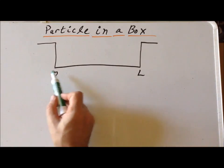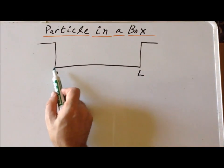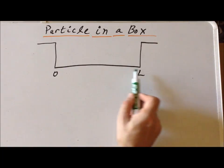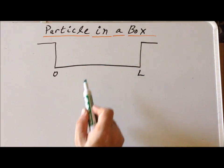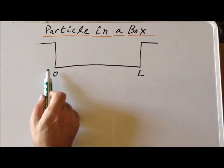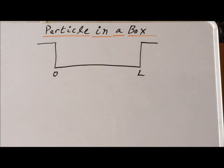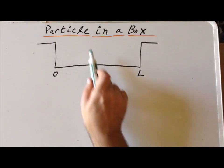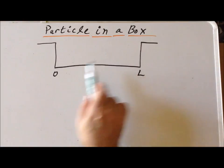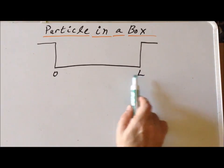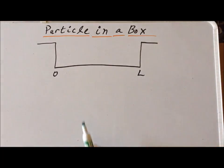By convention, we go along the x-axis, and the length of the box is L, so we can think of it as a coordinate system going from 0 to L — this is the area inside the box. Anything to the left of 0 or to the right of L is outside the box. The particle is completely free inside the box, so there's no potential between 0 and L, but to the left of 0 and greater than L, the potential is infinitely high.